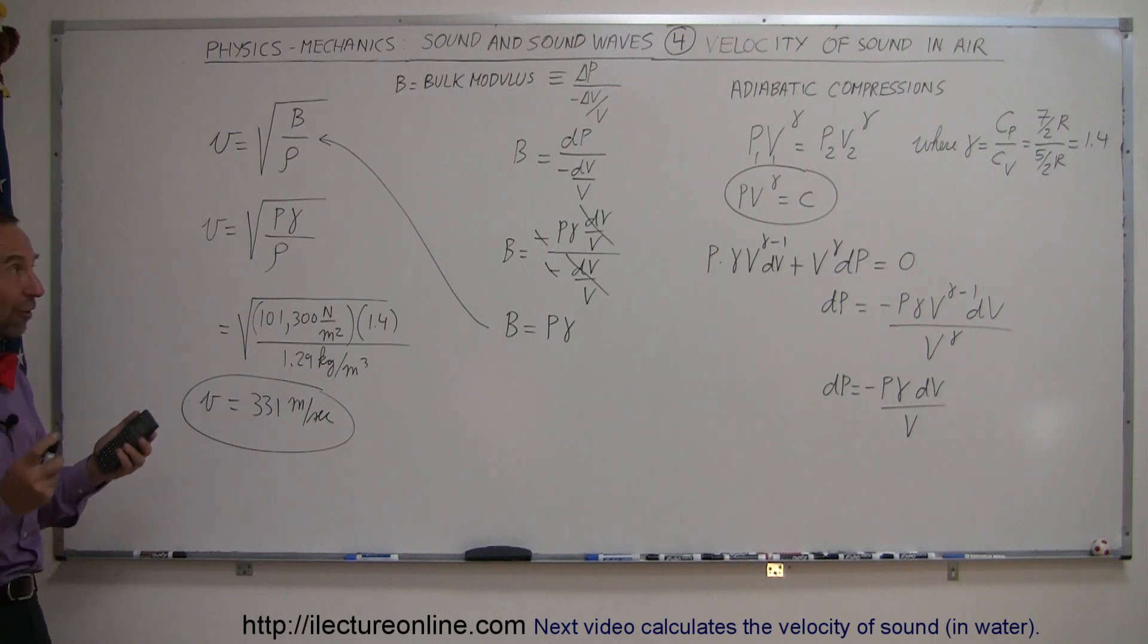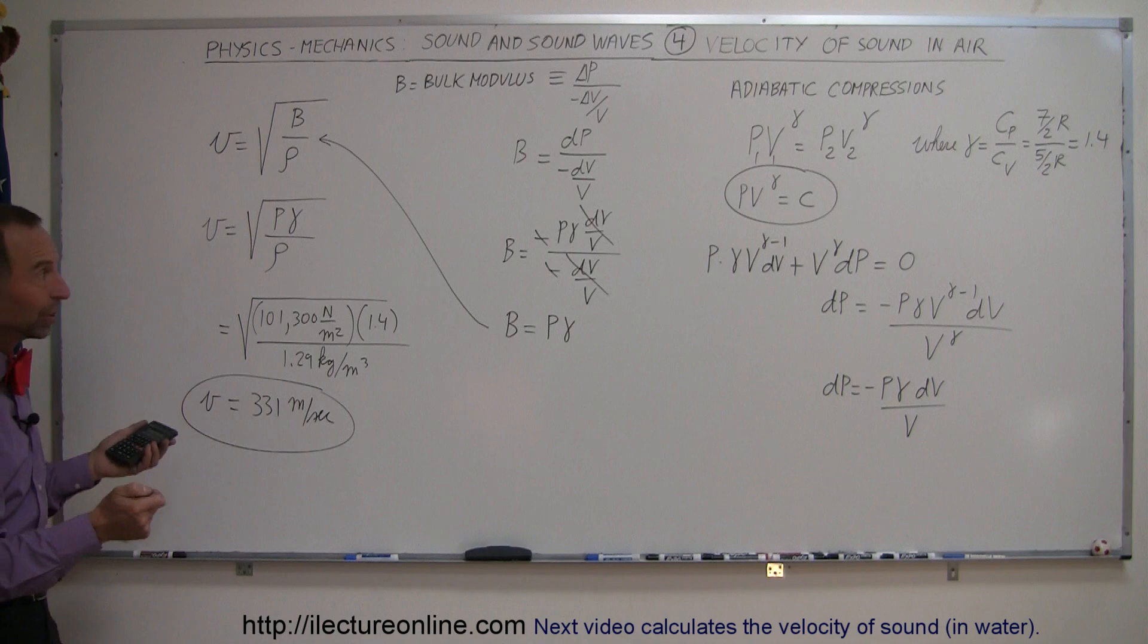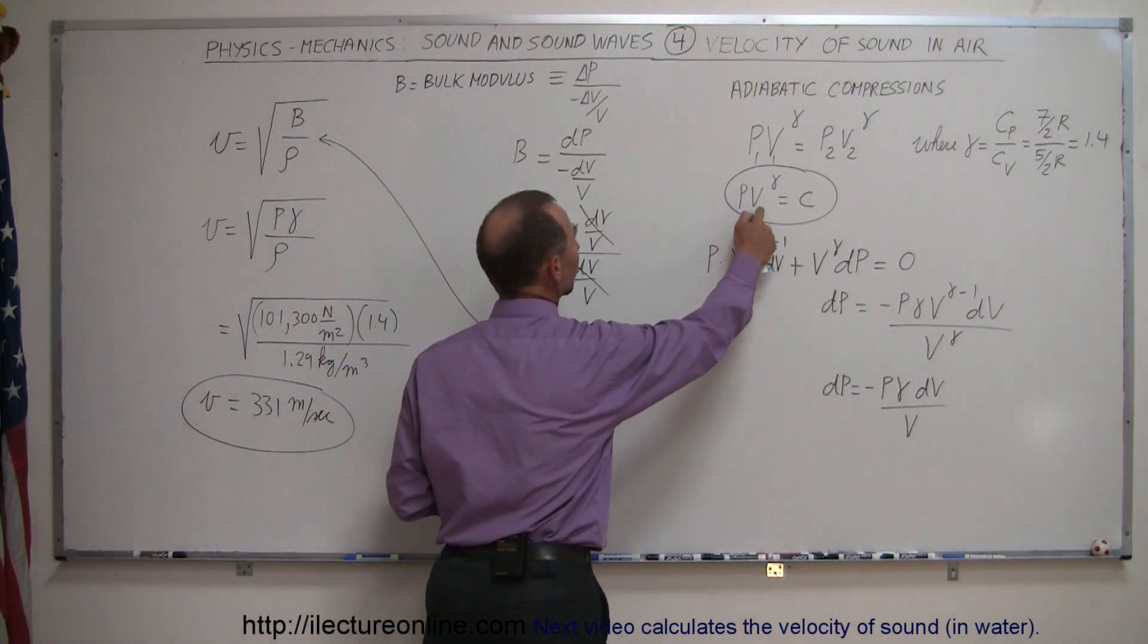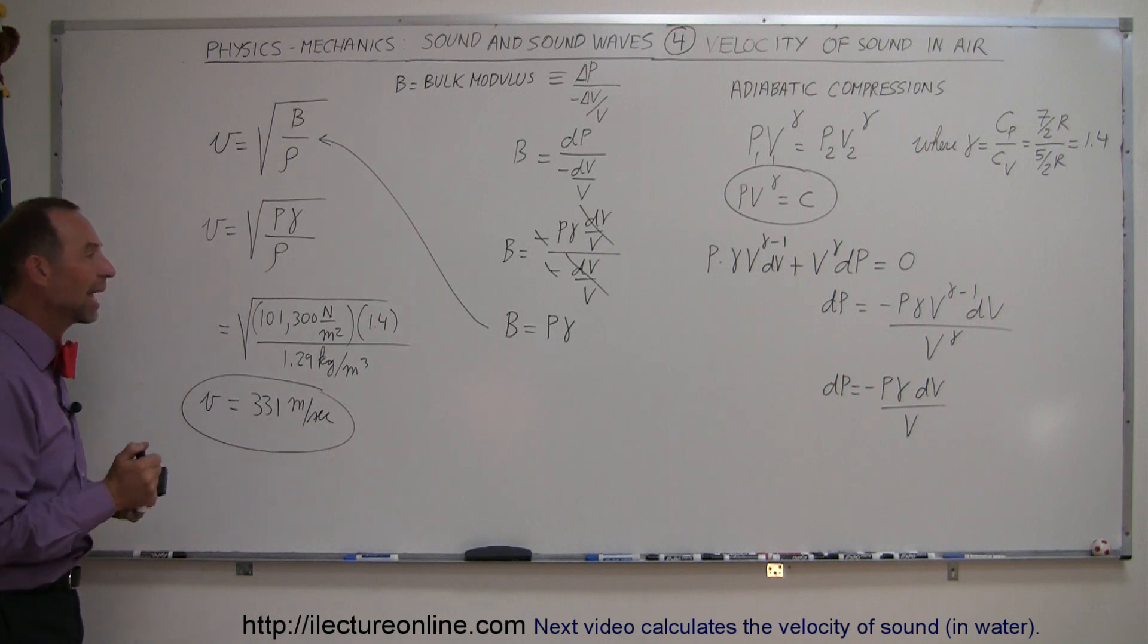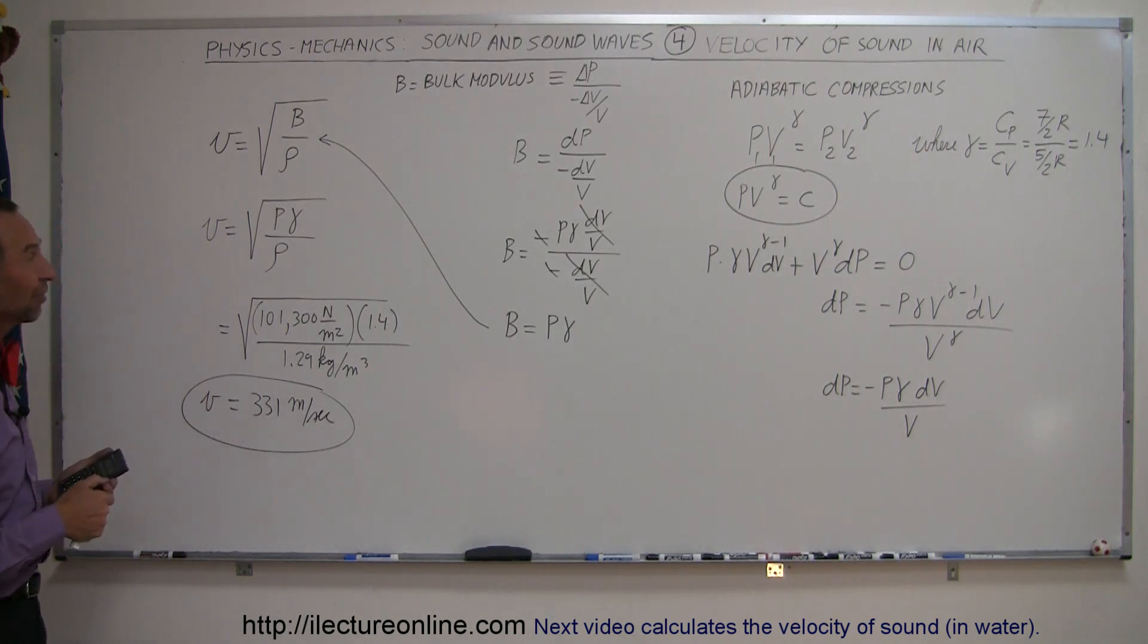Again, compressions are very fast. We have to use adiabatic compression theory, which is simply that the pressure times the volume to the gamma equals a constant from one state of the gas to the other state of the gas. And from that, we can nicely calculate the speed of sound.